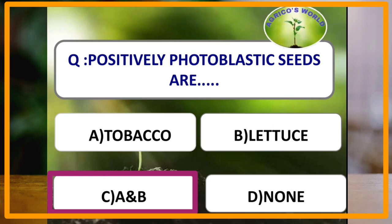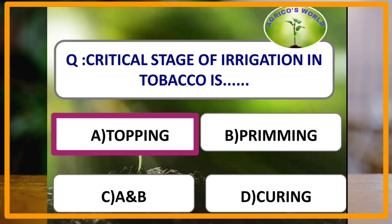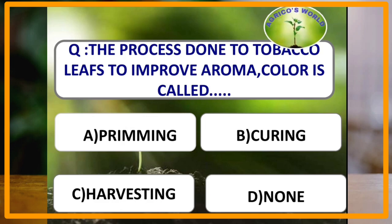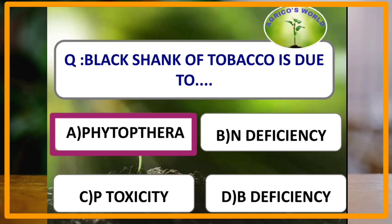Nicotine sulfate is used as an insecticide, herbicide, fertilizer, and also as a fumigant. The critical stage of irrigation in tobacco is topping. The process done to tobacco leaves to improve aroma and color is known as curing, which is also done in tea. Black shank of tobacco is caused by Phytophthora parasitica.